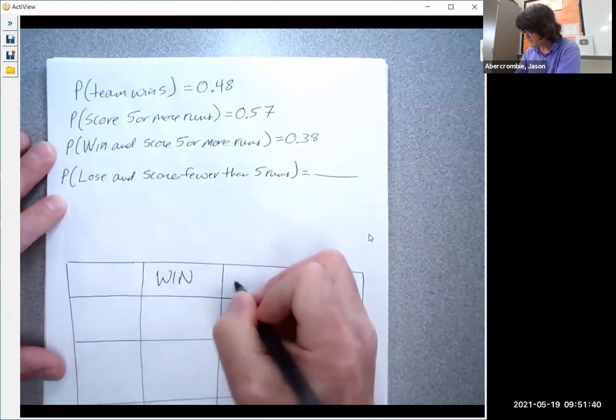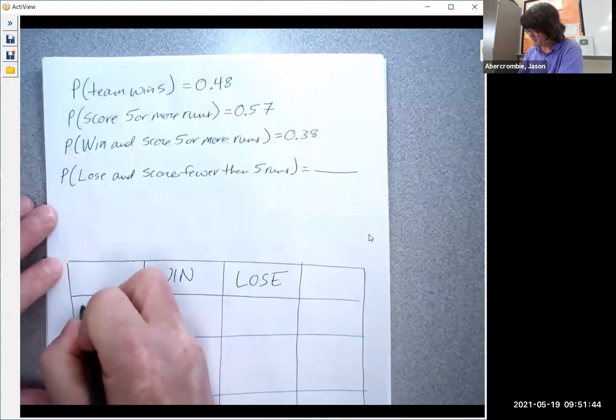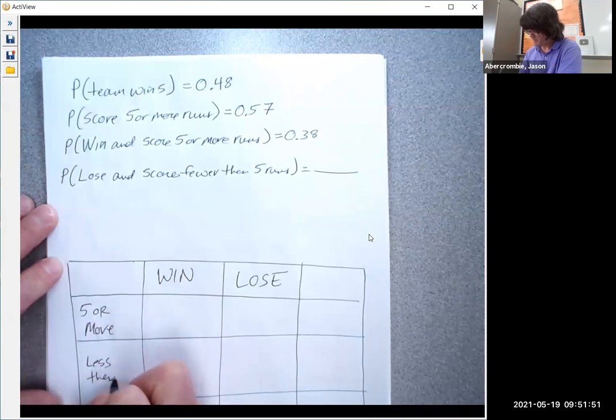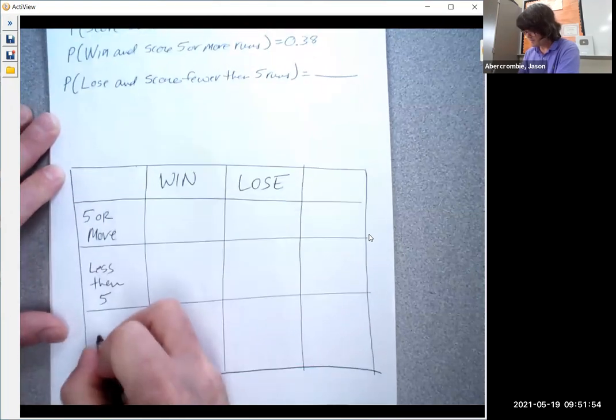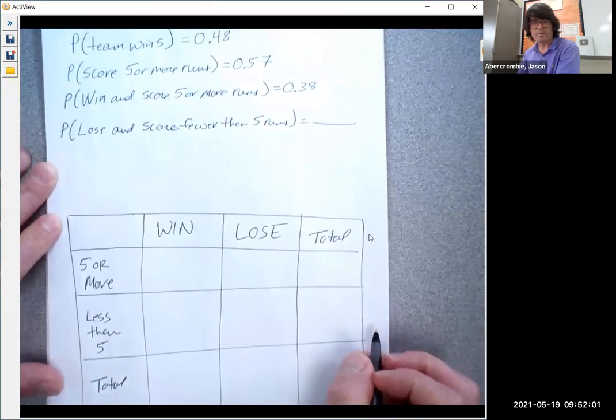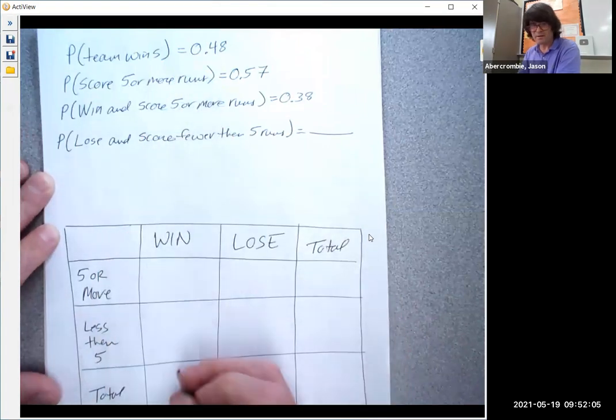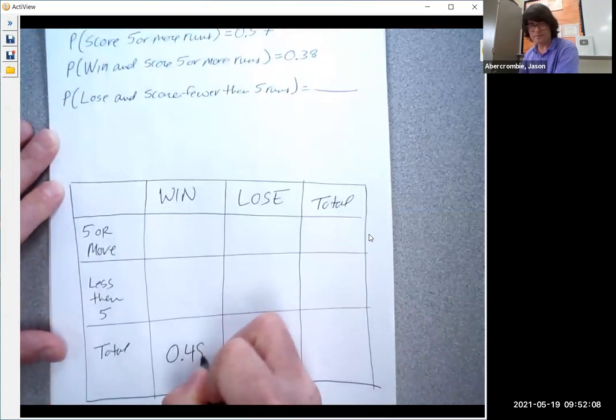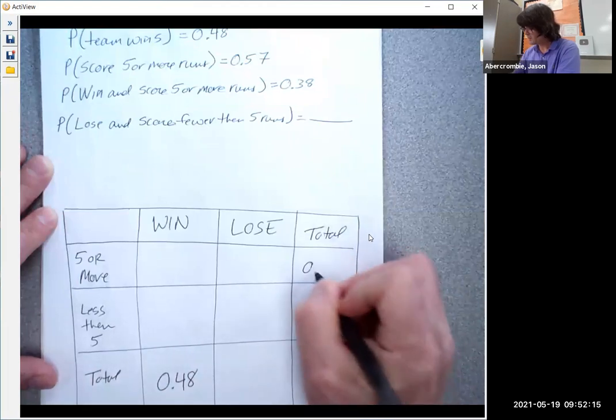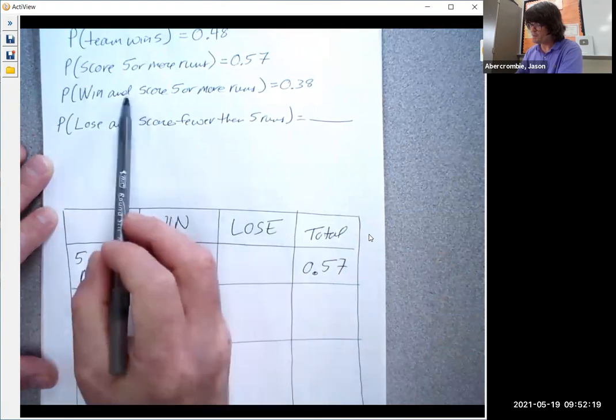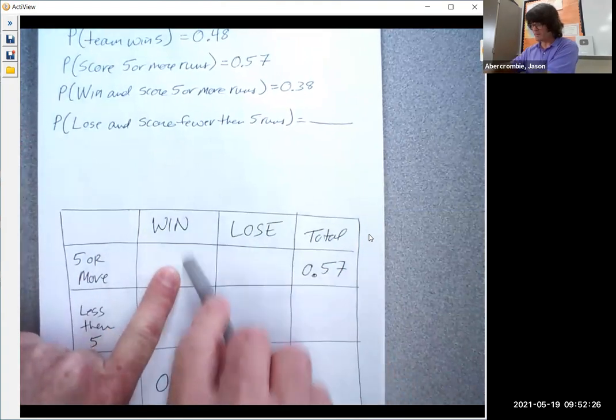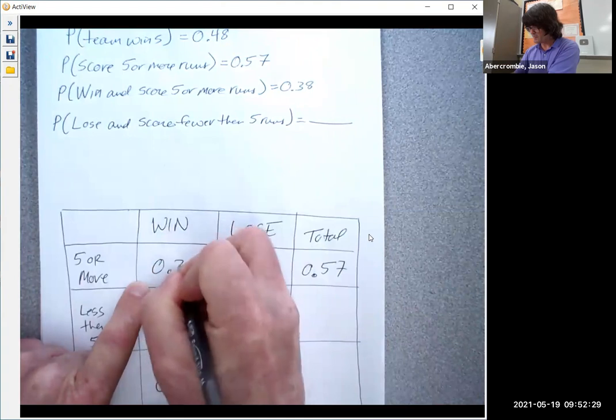First of all, we'll do win and lose. Then we'll do five or more and then we'll do less than five. And this will be total and total. Let's fill in what we know. We know that the chance the team wins is 48%. So here's win. The total win is 48%. The chance that we score five or more runs—here's five or more runs—that's a total probability of 57%. The chance we win and score five or more runs. Here's win and here's five or more. So win is here and five or more. This is going to be 0.38.